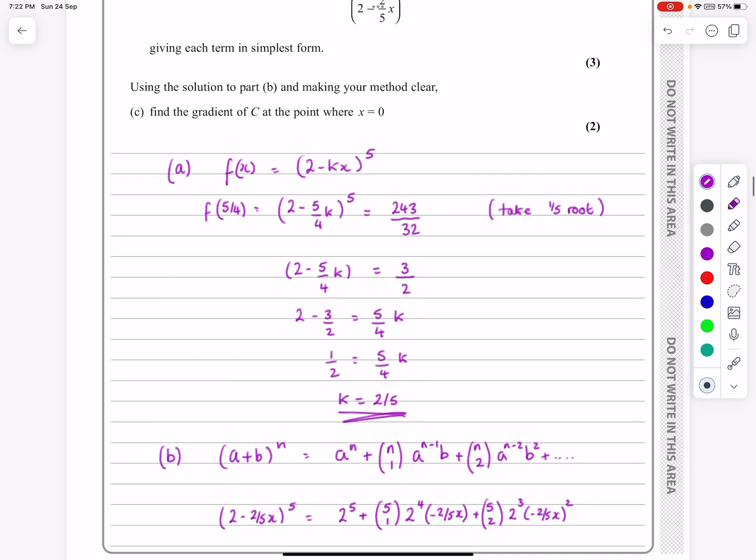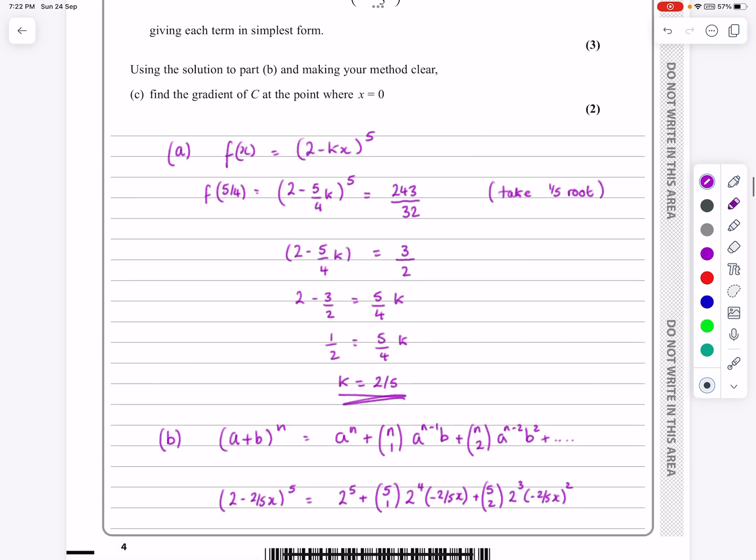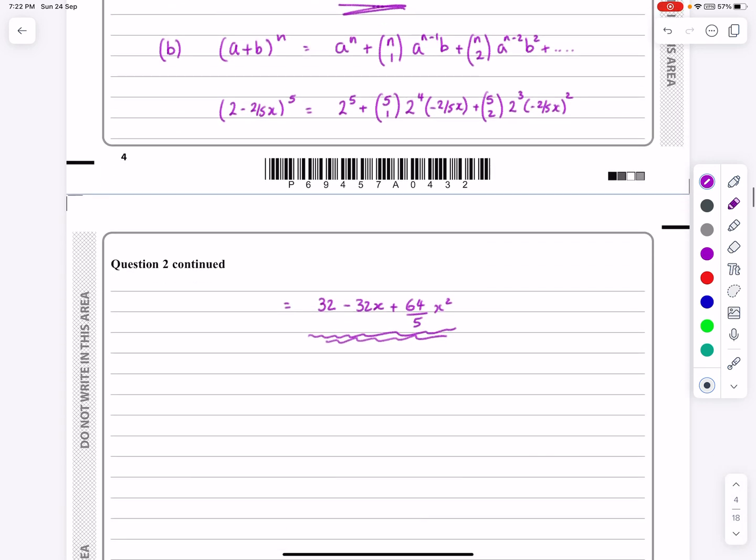Part C says, can we find the gradient where at the point where x equals 0? Okay, well if this is f(x), then if I want the gradient, I'm just going to do f'(x), and at first you might think, well this has got more terms, I just haven't put them in here.